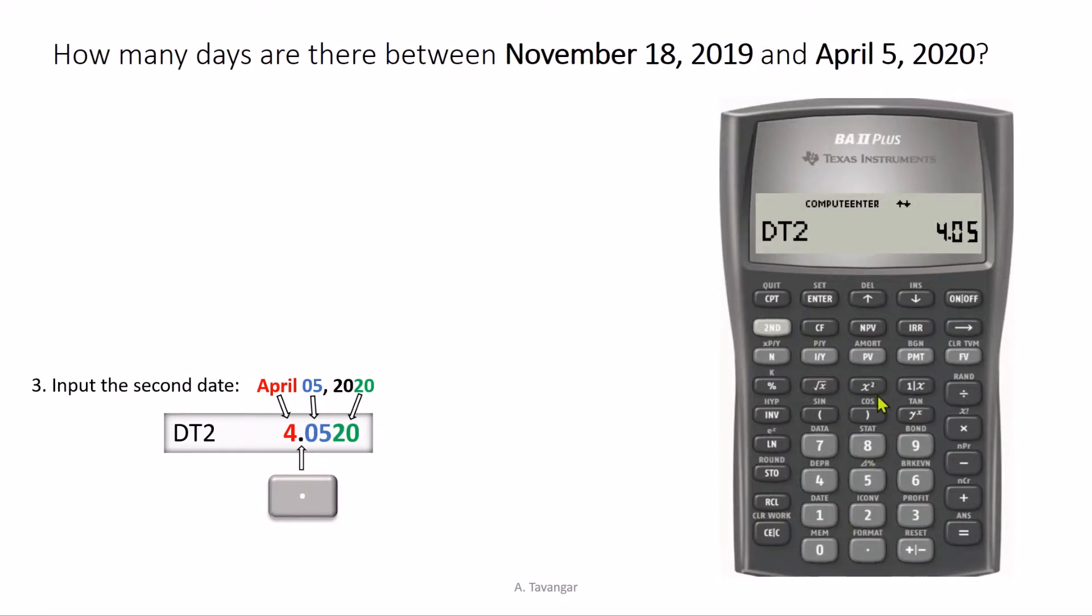The year is 2020. The last two digits are two and zero, and then you press enter. And the second date is set.